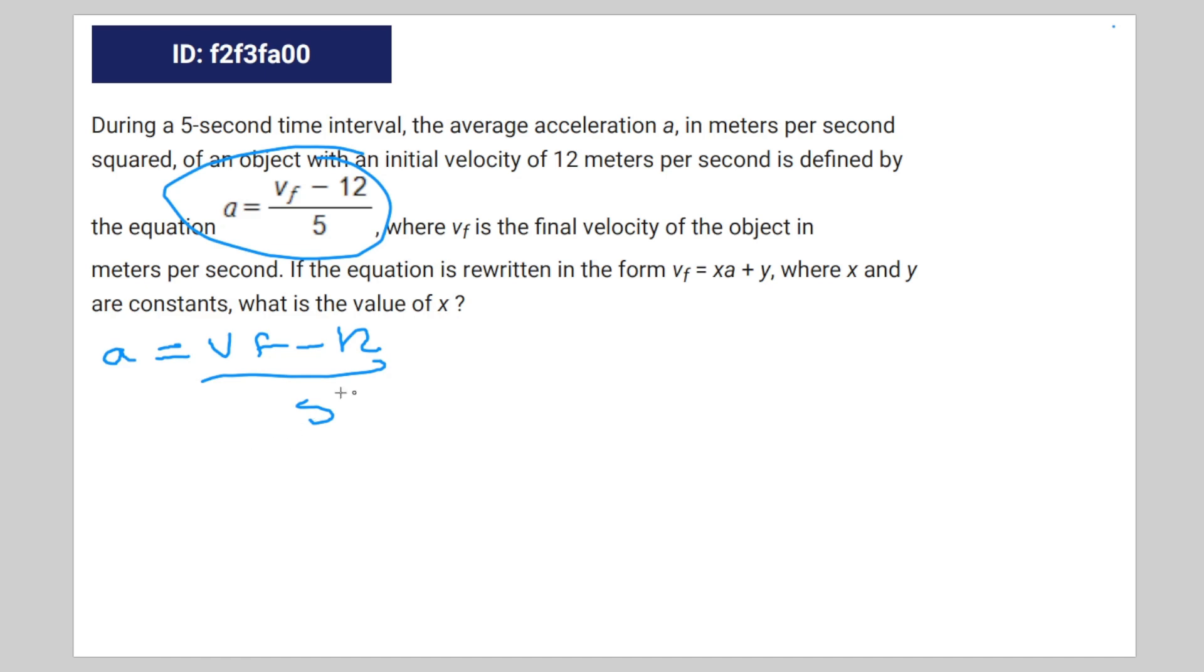Multiply both sides by 5. You get vf minus 12 is equal to 5a. Add 12 to both sides and you get vf is equal to 5a minus 12.